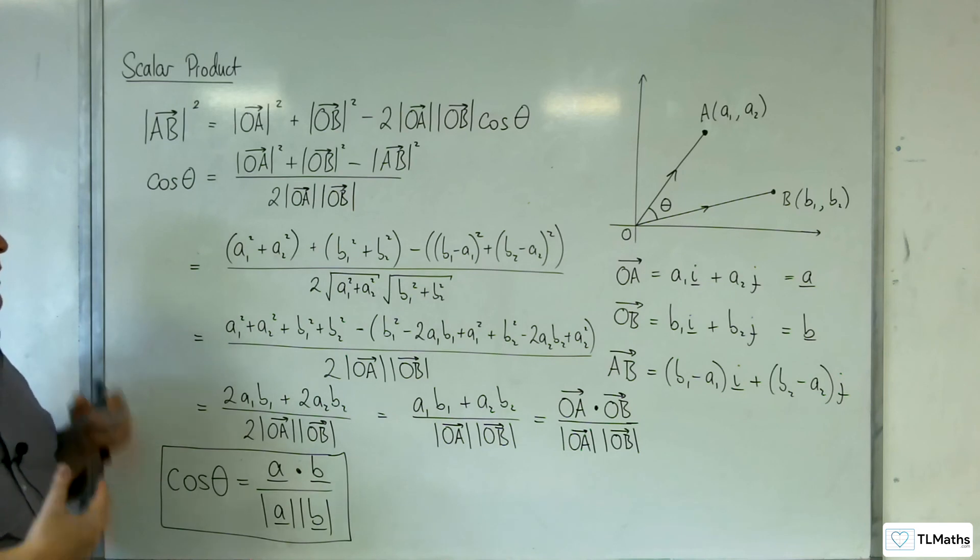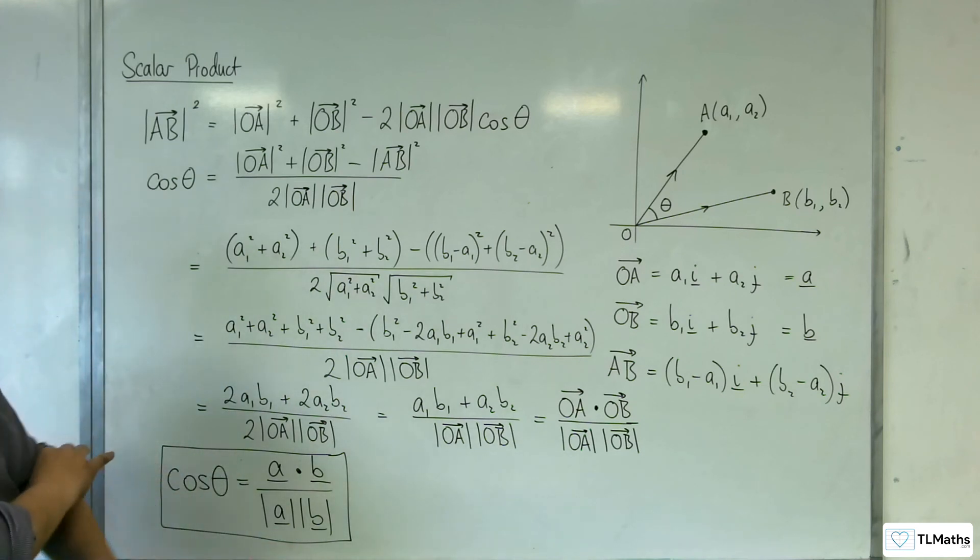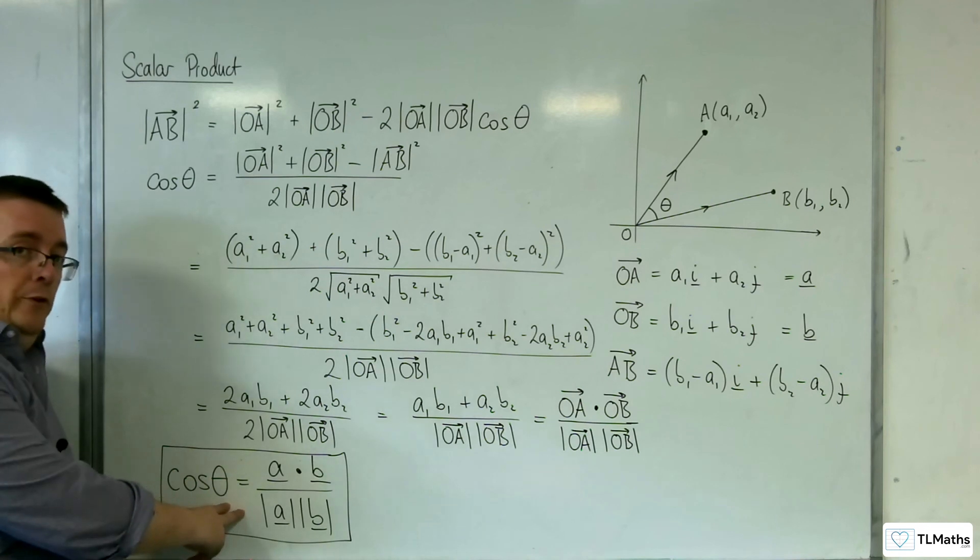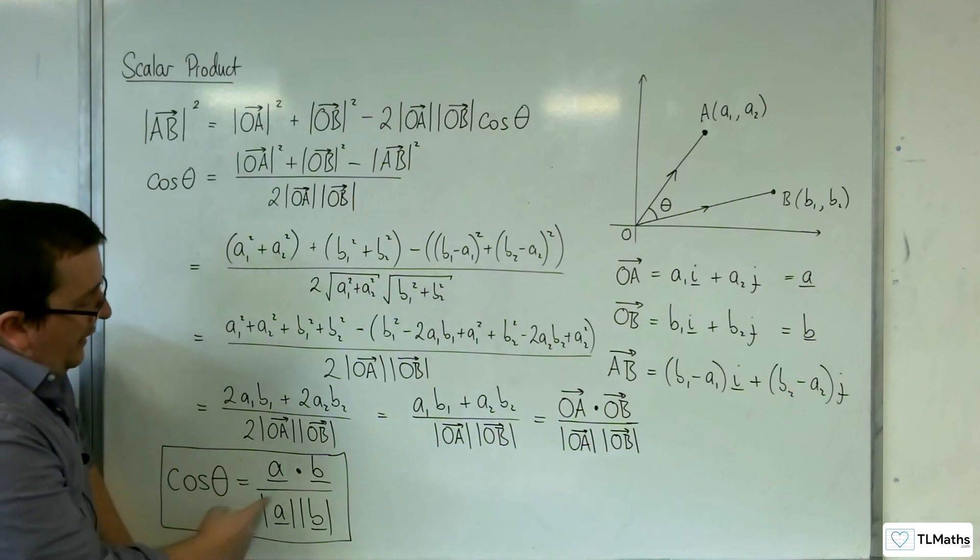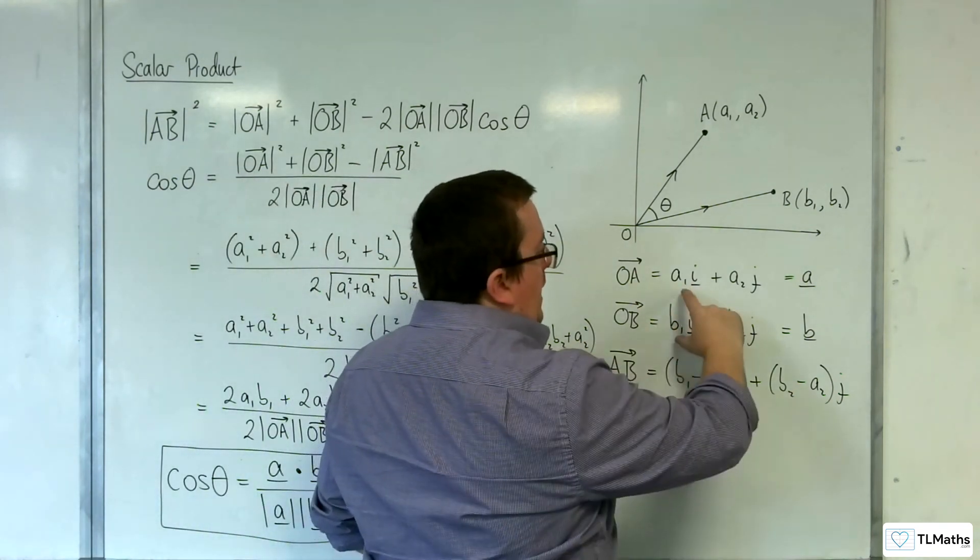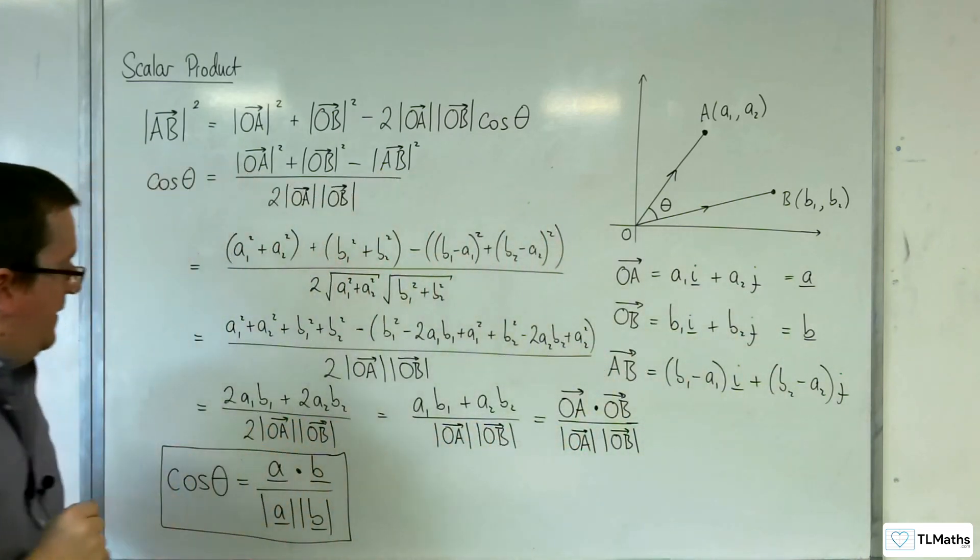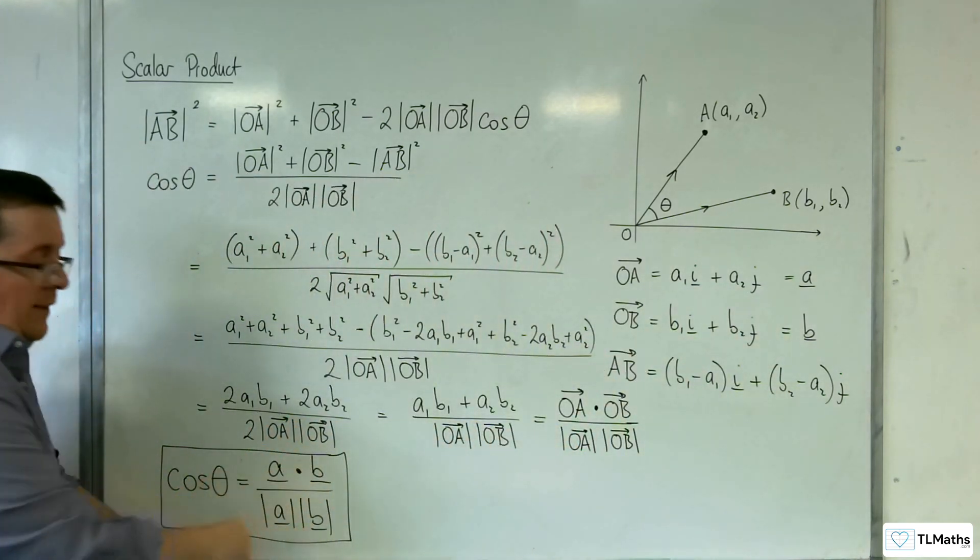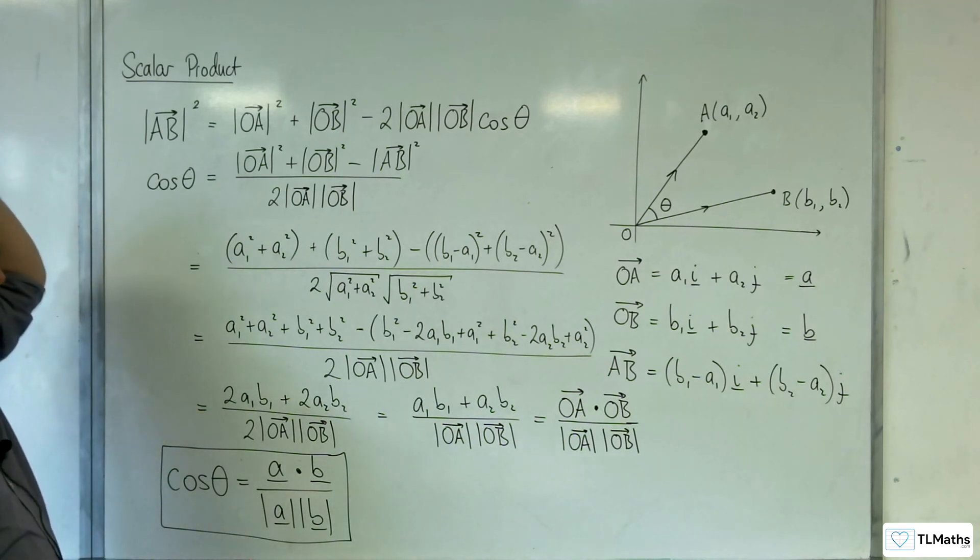So this actually, rather than going through the cosine rule, really speeds up the process of being able to find the angle between two vectors. Because now all I need to do is find A dotted with B, which I now know just means I multiply the number in front of the i's together and add on the number in front of the j's together, and then divide that by the lengths of A and B, and inverse cosine. Very easy to do.